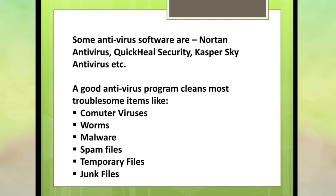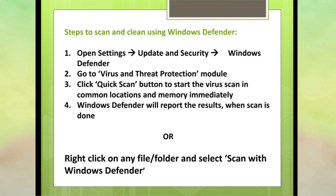All these things are detected and cleaned up by the antivirus program, so we must have a good antivirus program installed on our system. Now let us see how we can use the Windows Defender program to scan and clean our system. Windows Defender comes with Windows 10. To use it, go to Settings, then click on Update and Security, and select Windows Defender. Click on the Virus and Threat Protection module, which opens another window. From here, click on the Quick Scan button to start the virus scan in common locations and memory immediately.